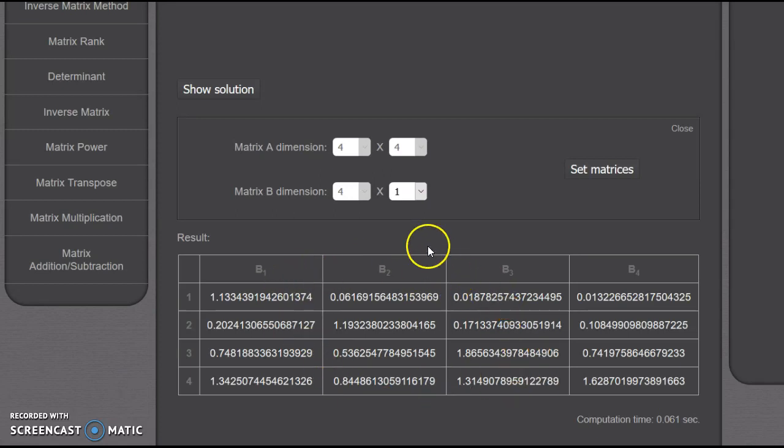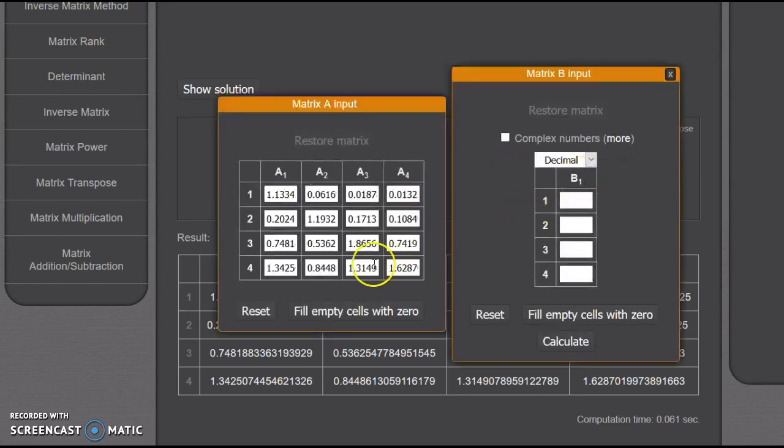I want to take this four by four matrix and multiply it by a four by one matrix, which would be our demand matrix. I want to set our matrices. On the left is our inverse matrix, and I want to multiply that by our demand matrix. I'm going to fill this in from our previous slides.